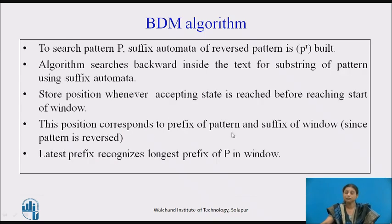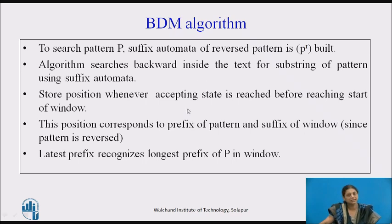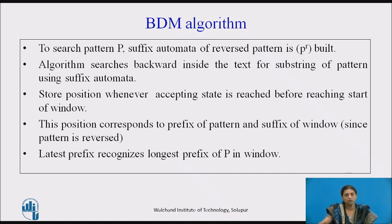Once you understand how to draw a suffix automata, we can look at the BDM algorithm. In this algorithm, we find the suffix automata for the reverse pattern, since we are processing from right to left. P^R is the reverse pattern. The algorithm searches backward inside the text for a substring of the pattern using the automata. Whenever we reach an accepting state, we have found a suffix, and we store that position as the latest prefix recognized.